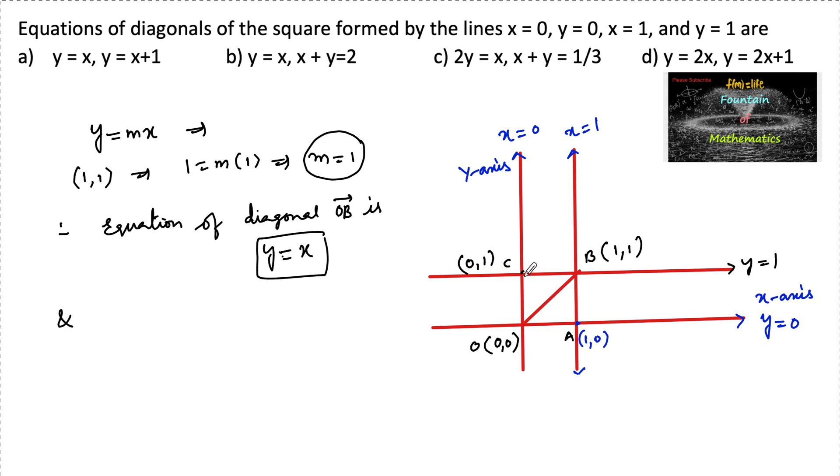And another diagonal AC is another diagonal having the point A 1, 0 and C 0, 1. So it's a line passing through, the other diagonal which is passing through 1, 0 and 0, 1 which says clearly here x-intercept is 1 and y-intercept is 1.